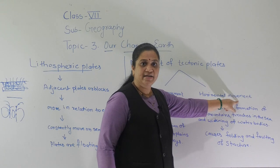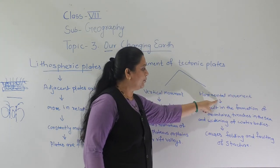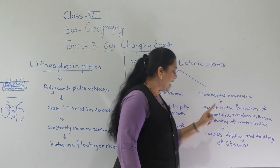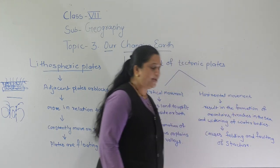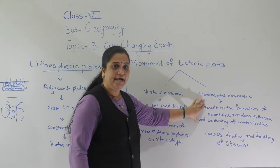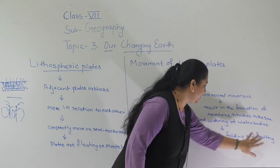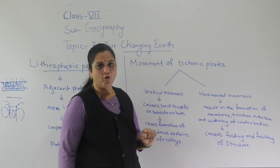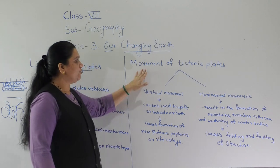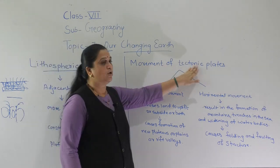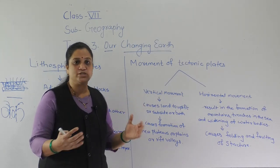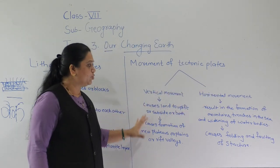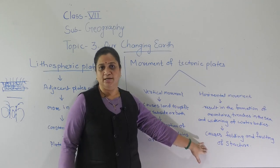The second type is horizontal movement. Horizontal movement results in the formation of mountains, trenches in the sea, and the widening of water bodies. It causes the folding and faulting of the rock structure. The key thing to understand is how the movements of tectonic plates cause changes on the earth surface — vertical movement and horizontal movement together cause various changes on the earth's surface.